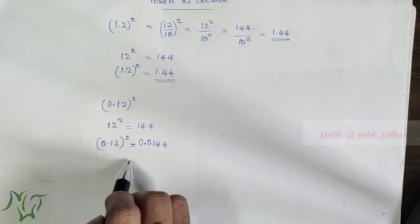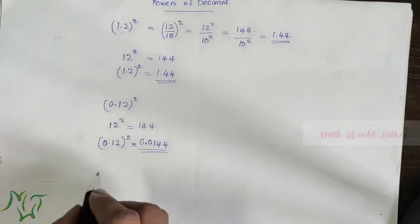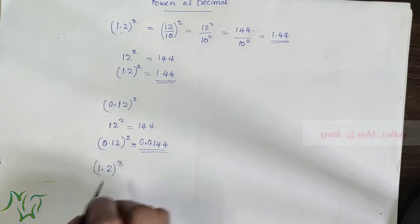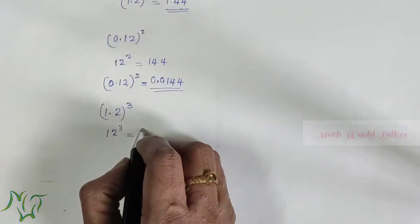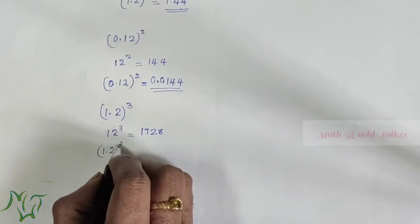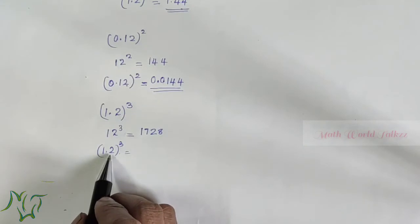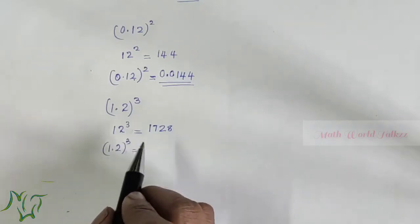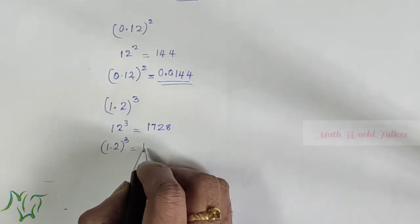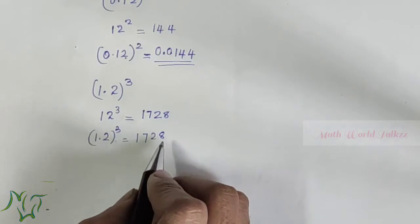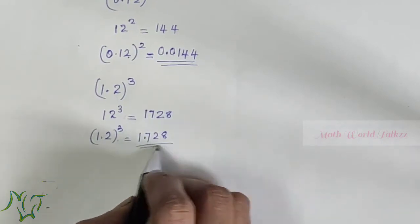One, two, three, four — put the point here, then add a zero. So the final answer is 0.0144. What about 1.2 whole cube? Without the decimal the number is 12, and 12 cube is 1728. Here we have one decimal place and the power is 3, so one times three gives three decimal places. Writing 1728 with three decimal places: the answer is 1.728.